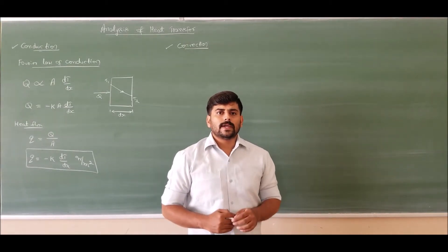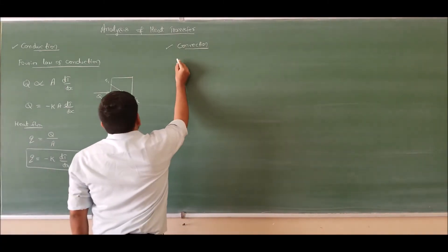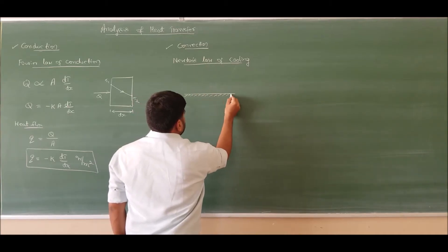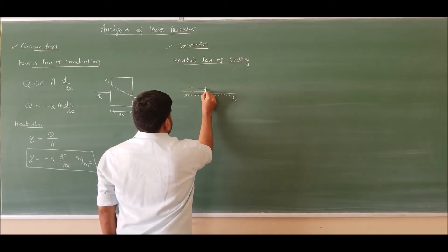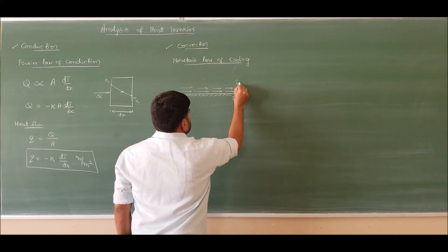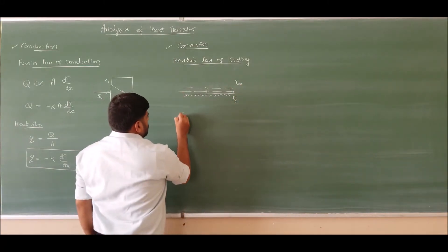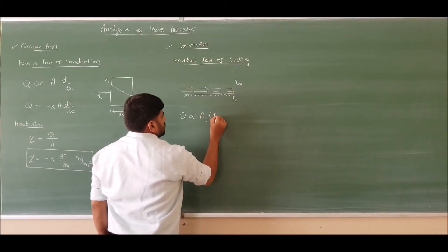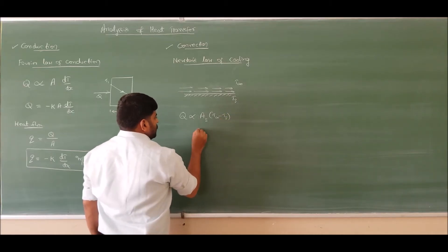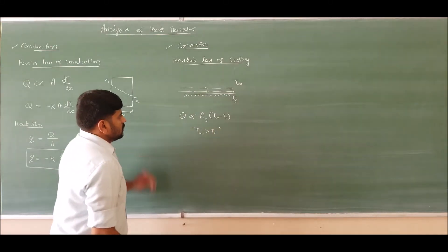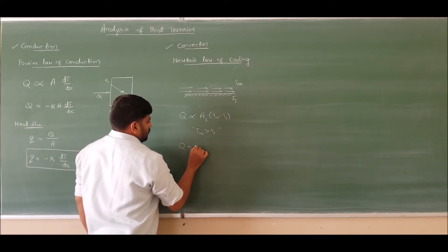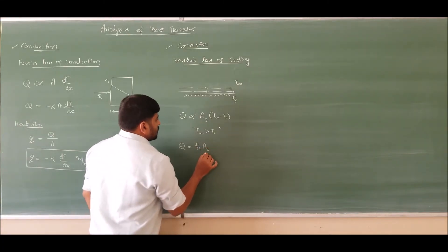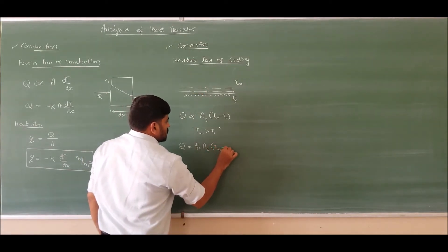The convection mode of heat transfer is governed by Newton's law of cooling. It states that if we consider a surface of temperature T_s on which a fluid is flowing at temperature T_infinity, then according to Newton's law of cooling, the rate of heat transfer is proportional to the surface area and the temperature difference (T_infinity minus T_s), where T_infinity is greater than T_s. The proportionality constant is the convective heat transfer coefficient h, multiplied by the surface area in contact between the fluid and the surface.